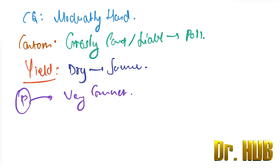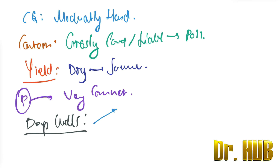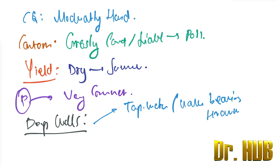On the other hand, deep wells tap water from a water-bearing stratum, and this stratum is below the first impervious layer of the ground.